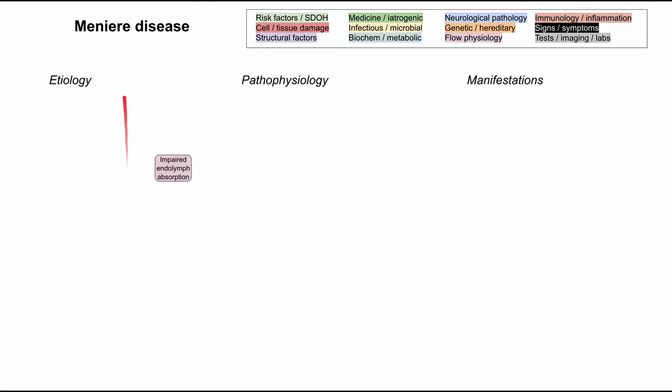We'll start with the pathophysiology of Meniere disease. It's a disease that has impaired endolymph absorption. Endolymph is a fluid that's in the semicircular canals in your inner ear, and if you don't have absorption of endolymph, you'll end up with accumulation of the fluid in the endolymphatic sacs. This condition is called endolymph hydrops.